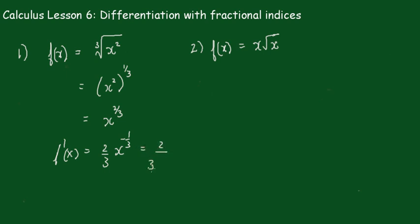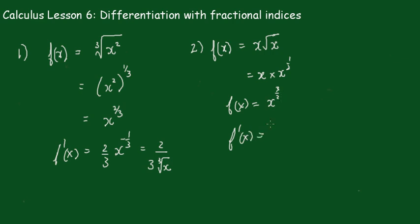Have a go at number two. This was actually an HSE question and many students use a longer method. We write it as x times x to the half, and adding the indices gives x to the three-halves. So f'(x) equals three-halves times x to the half, which can also be written as three-halves times √x. Both forms are acceptable.